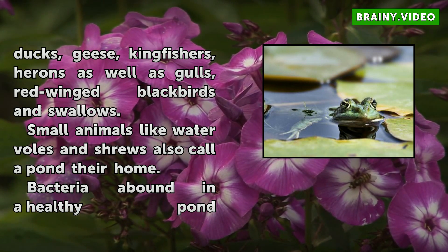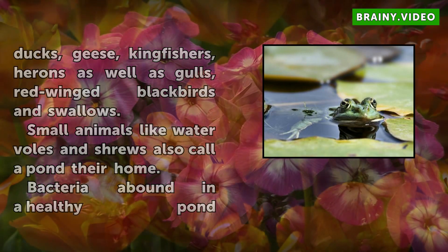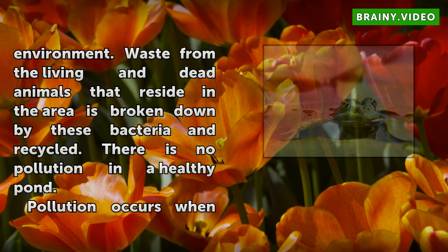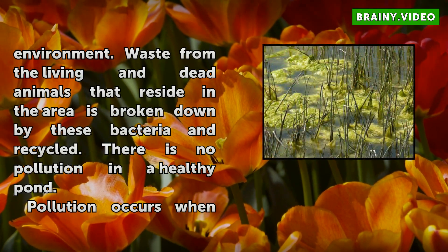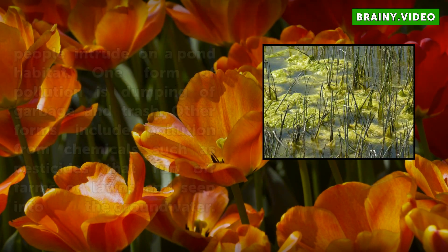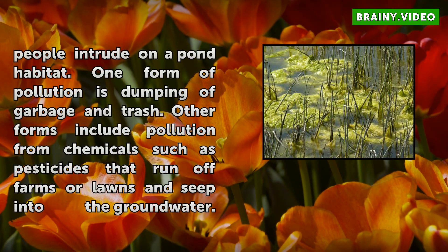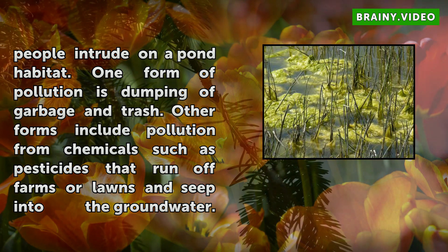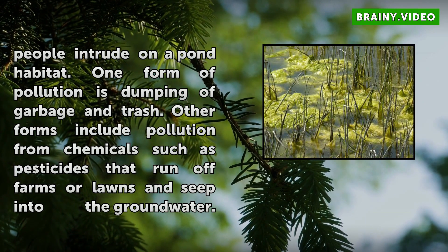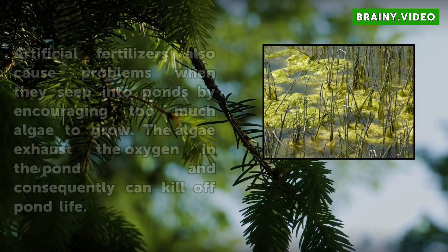There is no pollution in a healthy pond. Pollution occurs when people intrude on a pond habitat. One form of pollution is dumping of garbage and trash. Other forms include pollution from chemicals such as pesticides that run off farms or lawns and seep into the groundwater. Artificial fertilizers also cause problems when they seep into ponds by encouraging too much algae to grow. The algae exhaust the oxygen in the pond and consequently can kill off pond life.